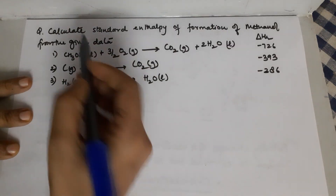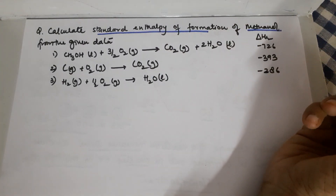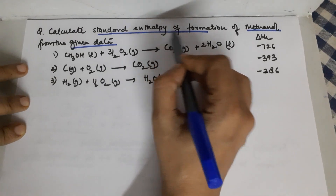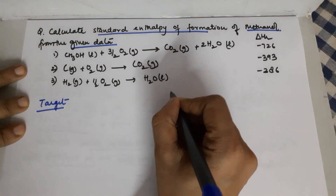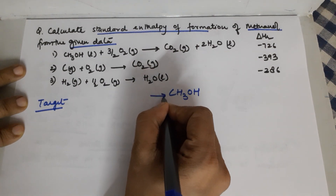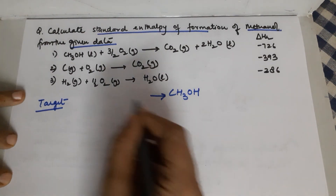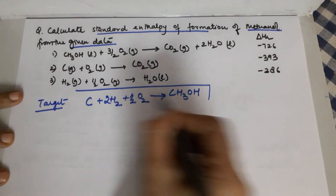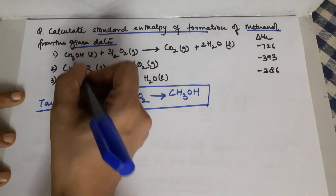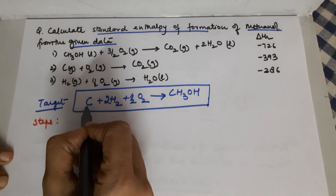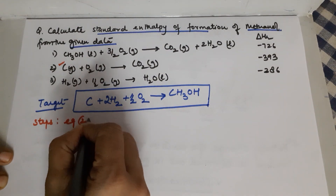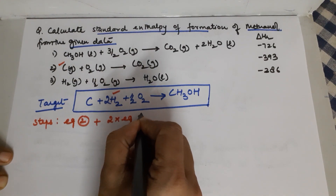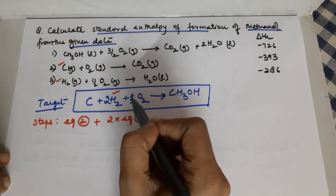The second question asks to calculate the standard enthalpy of formation of methanol using given data. The target equation is not given, so you must write it: the enthalpy of formation of methanol means forming it from constituent elements — carbon, twice H2 (because there are four hydrogens), and half O2 (because there is a single oxygen). This is the target equation you have to achieve from the given three equations. Carbon comes from equation two; twice hydrogen is available only in equation three, so add two times equation three.